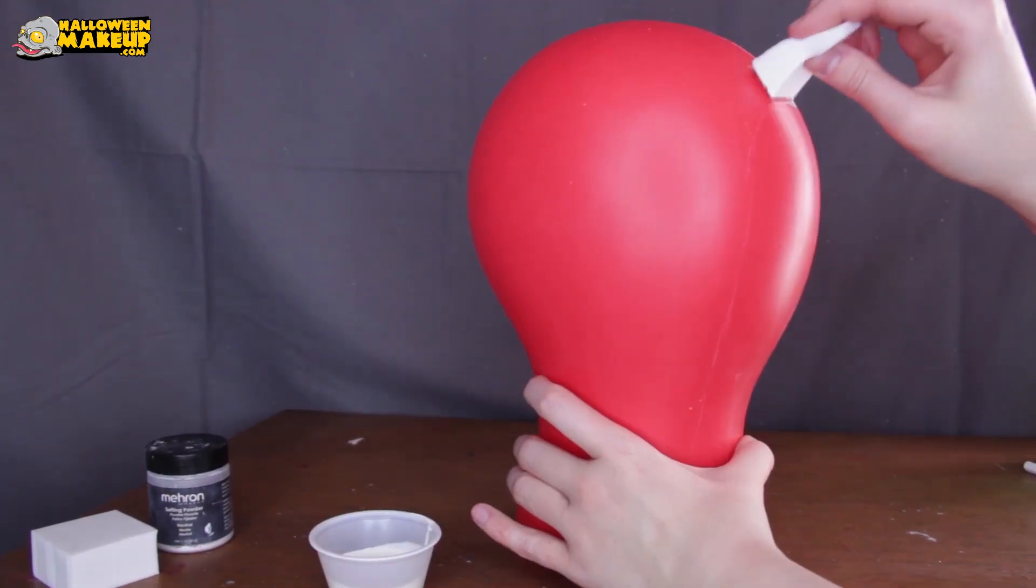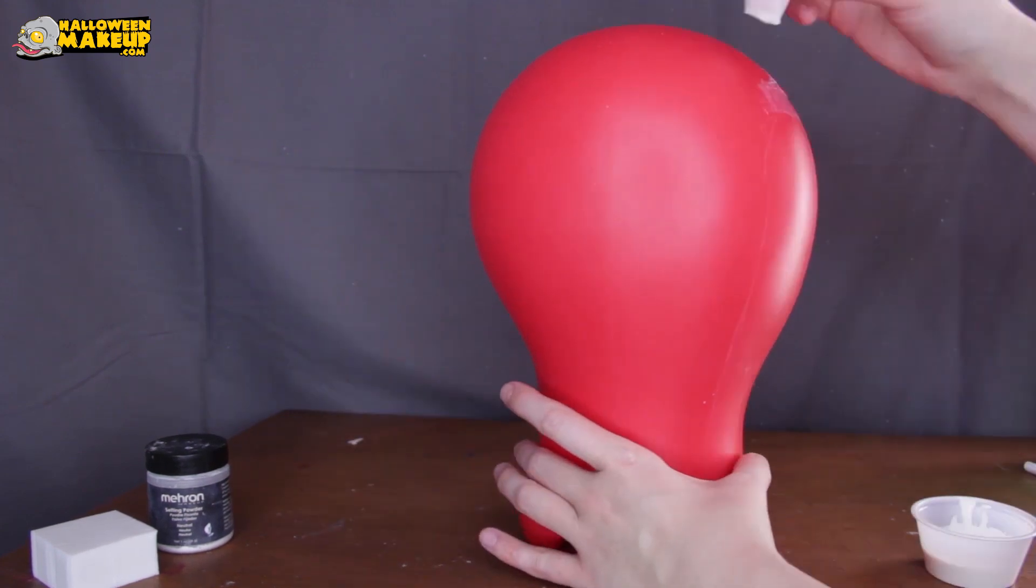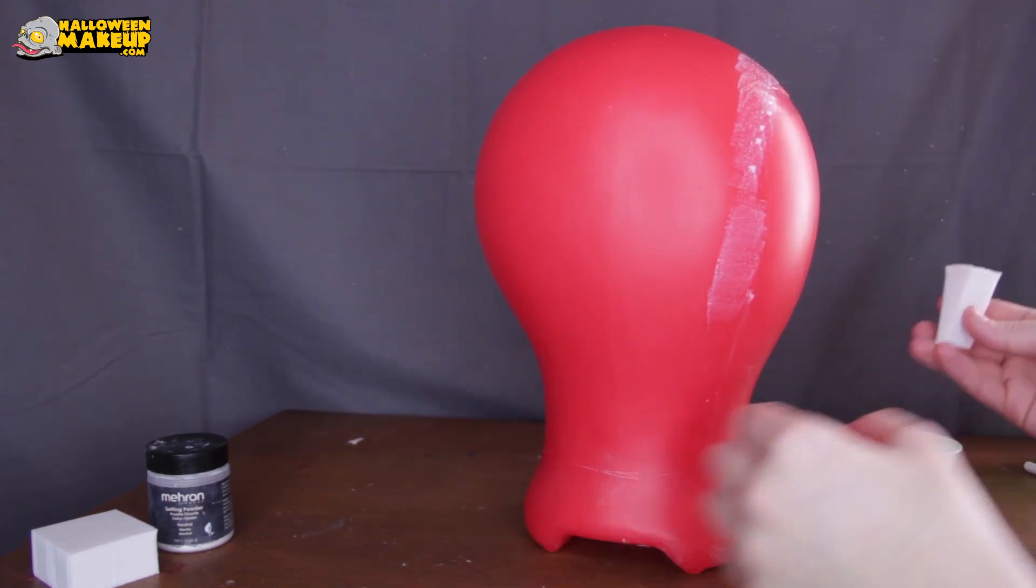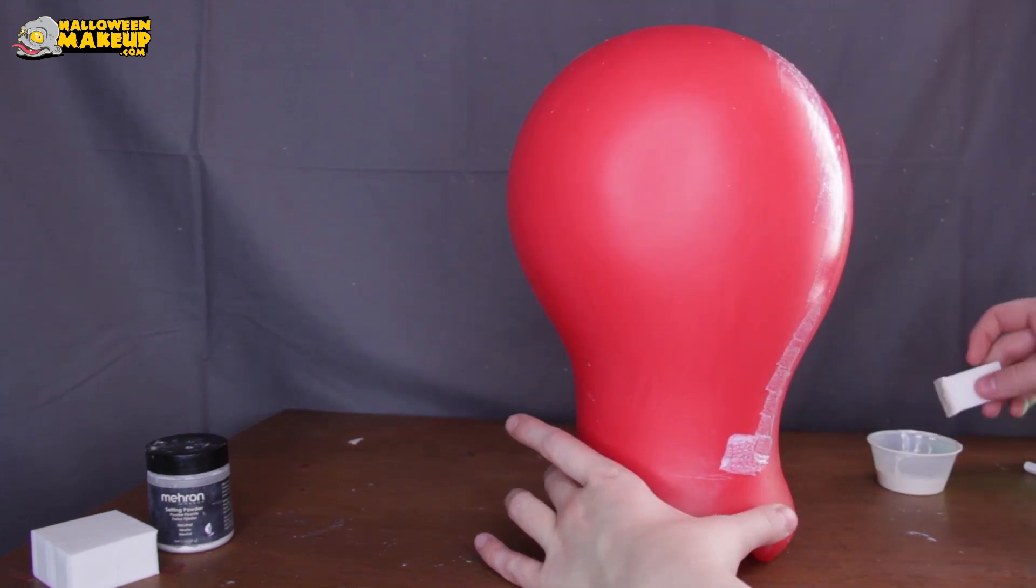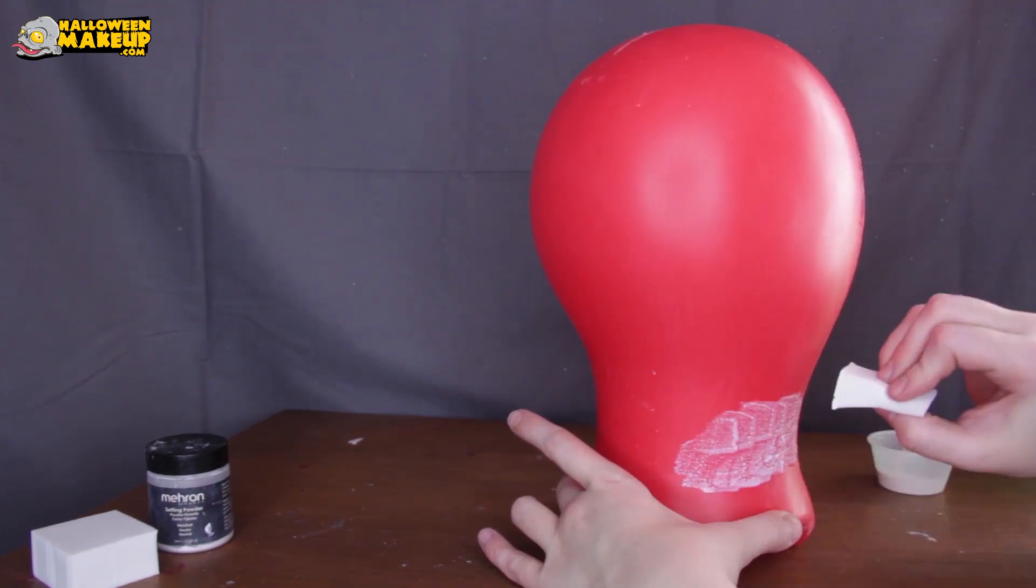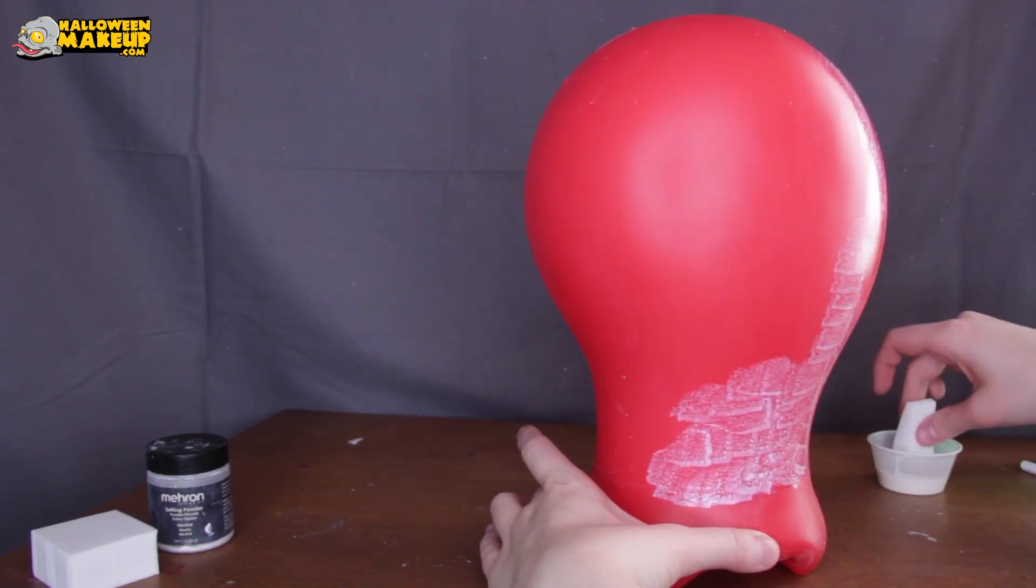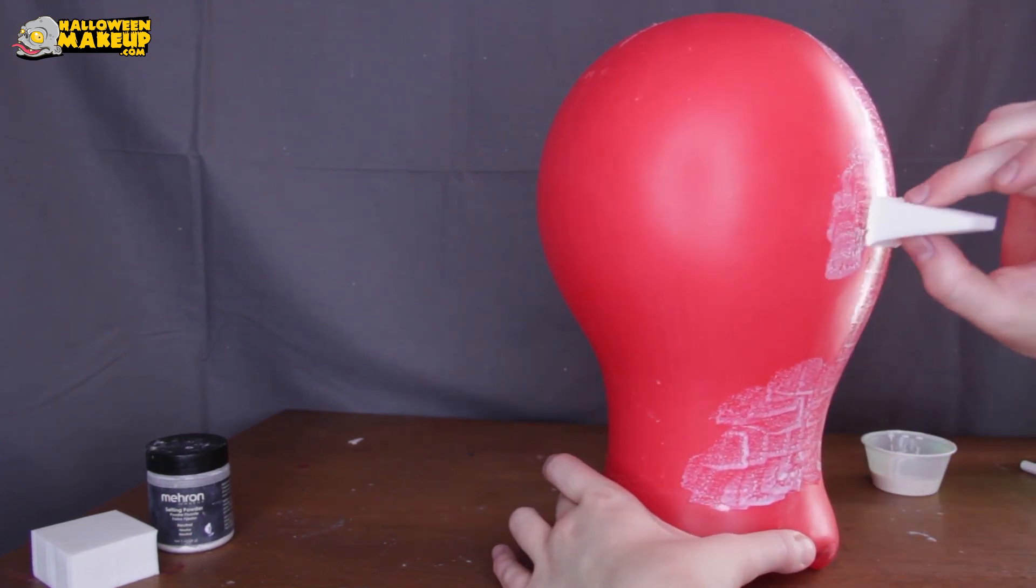Once I have that mapped out I get some latex and my makeup sponge and I just start dabbing away. I start with the front and mainly around the edges and then I work my way around. This is a really patient process so I recommend having your Netflix ready.